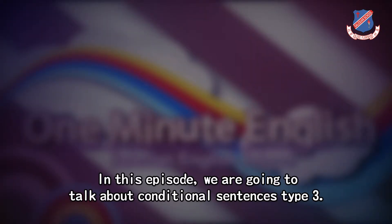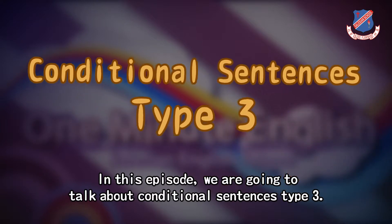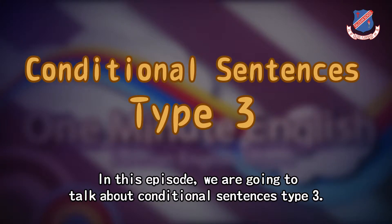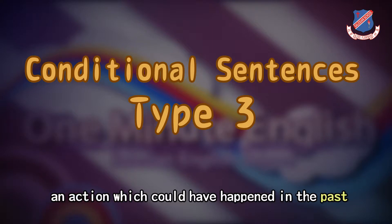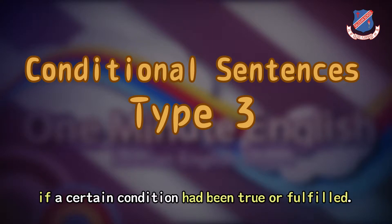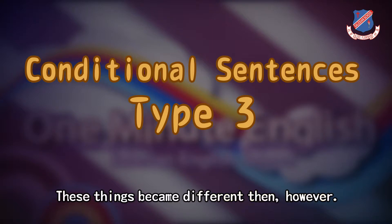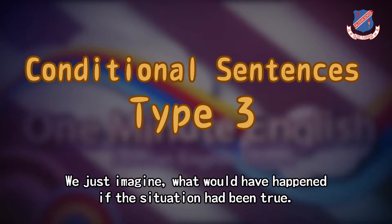In this episode, we're going to talk about conditional sentences type 3. We use conditional sentences type 3 to talk about an action which could have happened in the past if a certain condition had been true or fulfilled. These things became different, however. We just imagine what would have happened if the situation had been true.